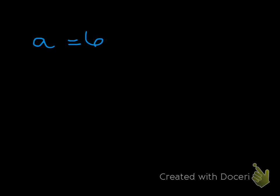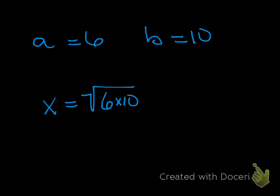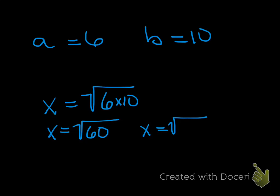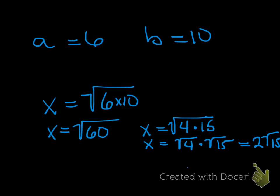Let's try the second one — the geometric mean of 6 and 10. The geometric mean is the square root of the product of those two numbers, so x is the square root of 60. That can be simplified as the square root of 4 times the square root of 15, which equals 2 times the square root of 15.